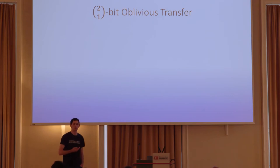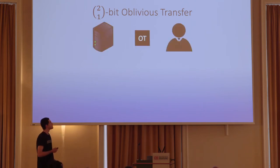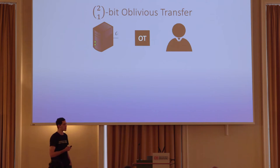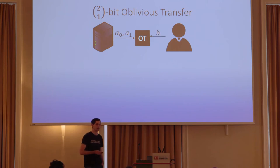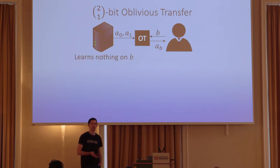Now I'm going to elaborate a bit more about the model we're working on and formalize the result. I'll start with the oblivious transfer functionality — specifically, we are using the one-out-of-two bit OT. Here, the server has two input bits A0 and A1, and the client has a single bit B. Only the client receives an output, which is A sub B. The server learns nothing about B, and the client doesn't learn anything about the other bit.